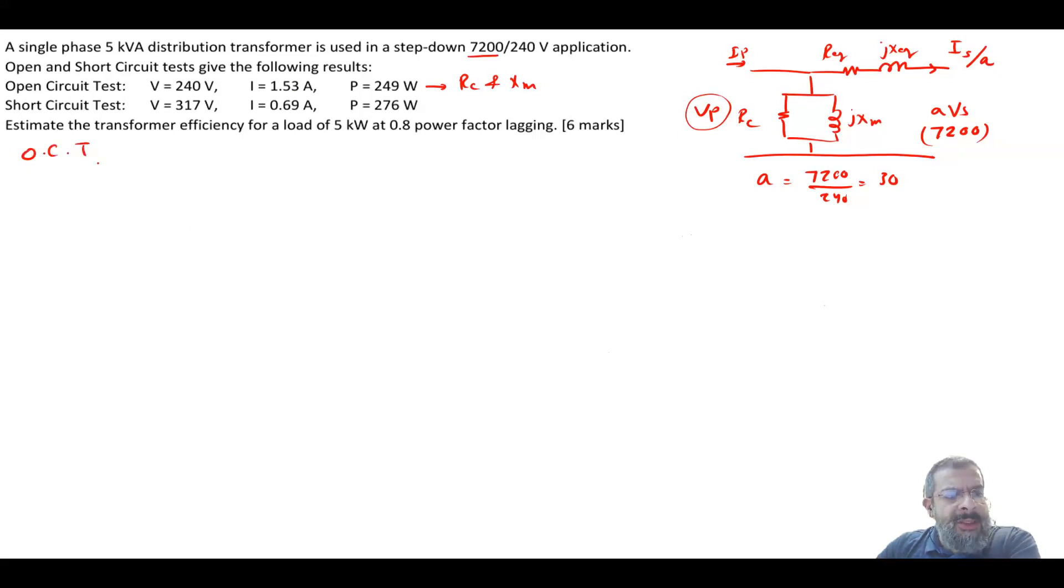Now let's start from the open circuit test. You will get the RC and XM. Now how do you do that? First, you find the admittance magnitude, which is the I divided by V, which is 1.53 divided by 240, and this will give me 0.006375. Then you will find the angle theta, which is cosine inverse of the power P divided by VI, which is equal to cosine inverse of 249 divided by 240 times 1.53. And this will give me 47.3. Usually the angle is more than that, but that's a theoretical question. So it's a value. We can live with that.